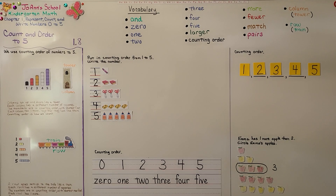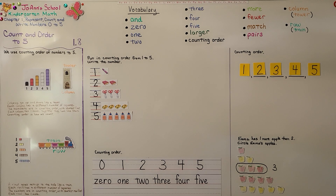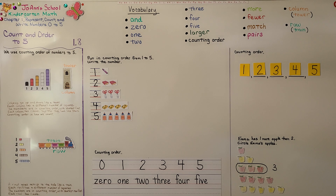Remember, a column goes up and down like a tower, and a row goes across like a train. You can practice putting numbers in order. Our next lesson, 1.9, we're going to talk about the number zero. I hope you'll have a wonderful day, and I hope you'll join me. Bye!